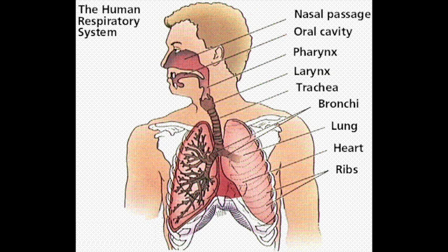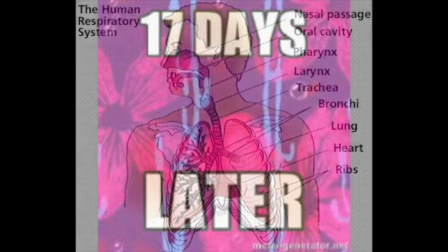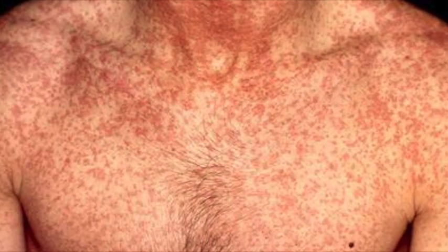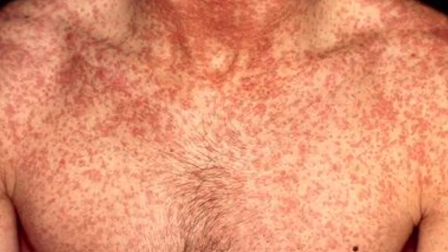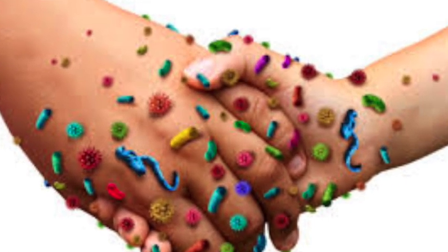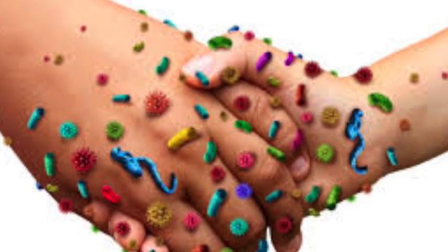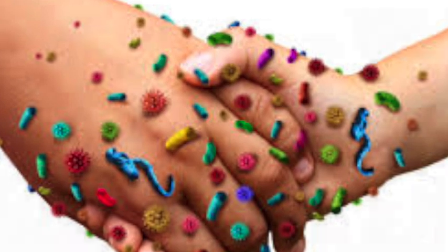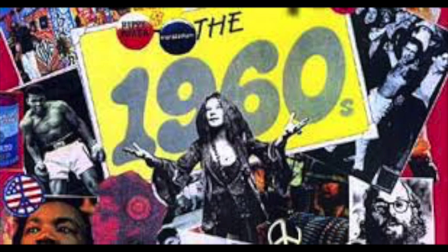The average incubation period of the rubella virus is 17 days. People infected with the rubella virus are most contagious when the rash is visible, but they can be contagious from 7 days before to 7 days after the rash appears. The last major outbreak of the rubella virus in the United States occurred from 1964 to 1965.